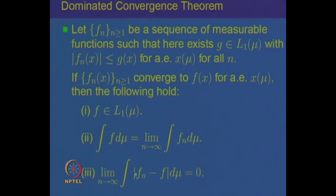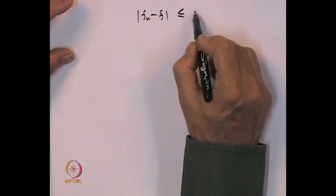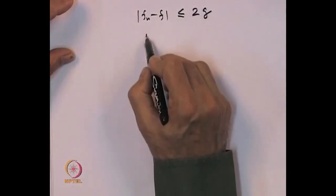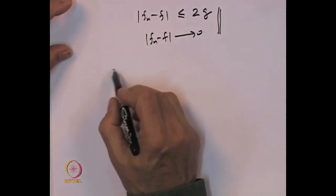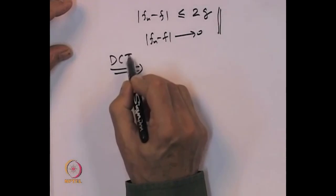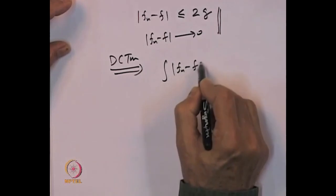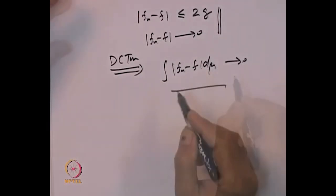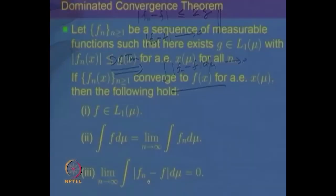One further consequence: the integral of |F_n − F| dμ also converges to 0. To see this, observe that |F_n − F| ≤ 2g and |F_n − F| → 0. So again an application of the dominated convergence theorem implies that the integral of |F_n − F| dμ goes to 0. That is another consequence of the dominated convergence theorem.